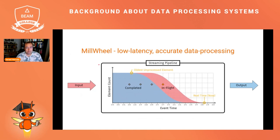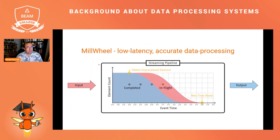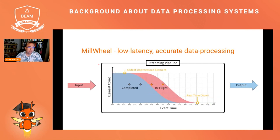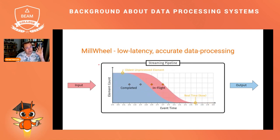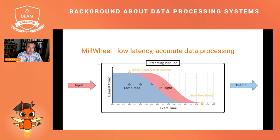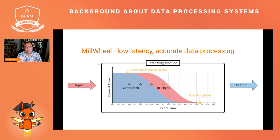There's another foundational system called MillWheel — a similar system for executing complex pipelines, but focused on streaming, low-latency processing, and accurate data processing. Back when these systems were created, it was accepted that stream processing would always be inaccurate. You may have heard of the Lambda architecture, where there was a batch pipeline and a streaming pipeline — the batch pipeline was slow but accurate, and the streaming pipeline was fast but inaccurate. At the end of the architecture, you had to reconcile both pipelines when batch data was ready, in order to amend the inaccurate output of the streaming pipeline.